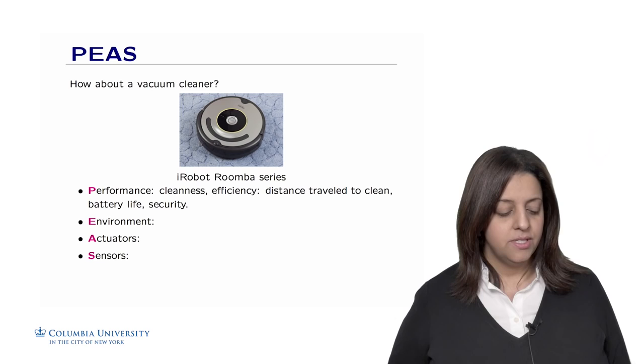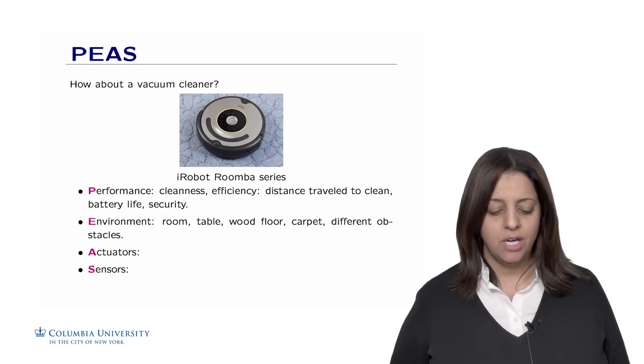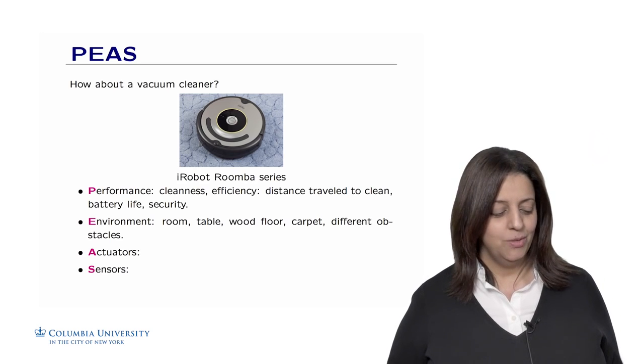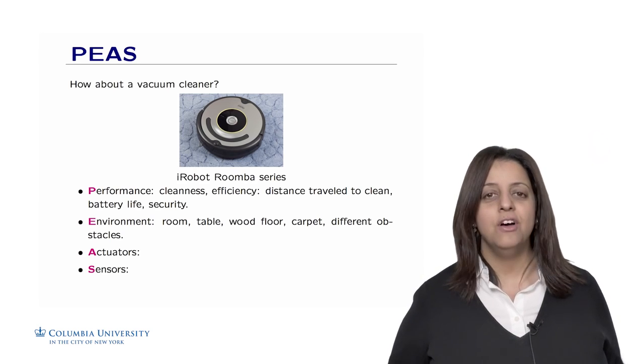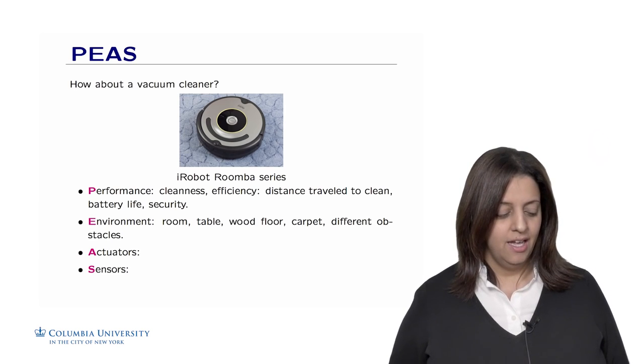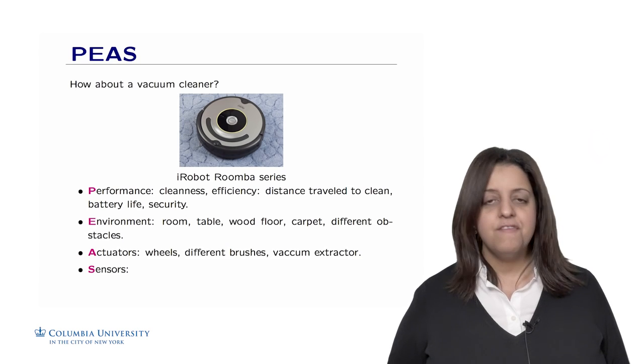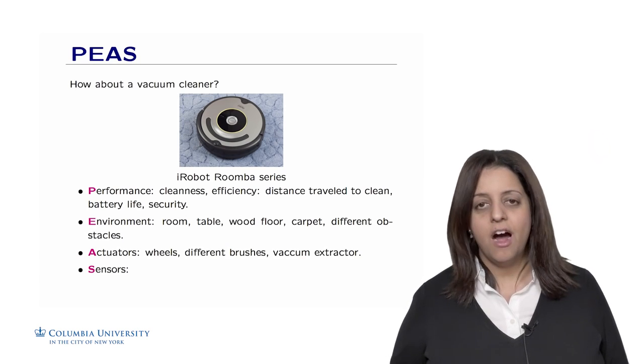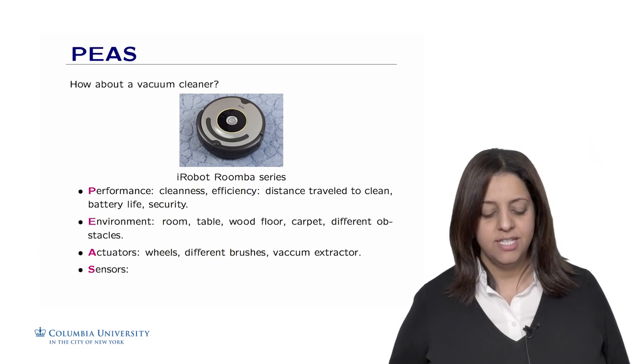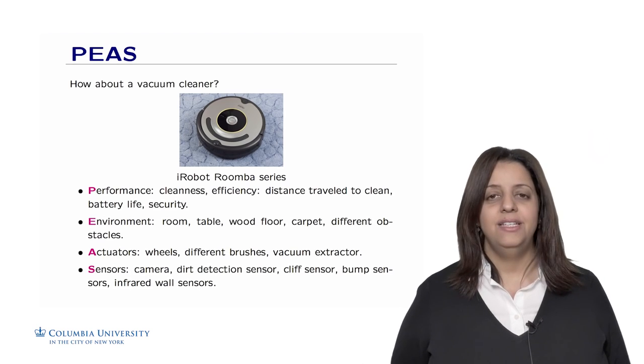The environment includes anything in the room, such as tables, wood floor, carpets, and different objects. Your kids' Lego could be swallowed by the machine. So the environment is anything around in the room that constitutes the environment of the vacuum cleaner. The actuators are the hardware of the vacuum that includes the wheels, the different brushes, along with the vacuum extractors to clean the dirt.